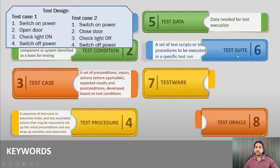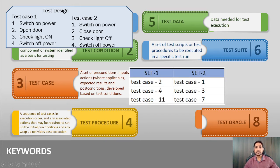Test suite is a set of test scripts or test procedures to be executed in a specific order or in a specific test run. You can have multiple test cases — say test cases 1 through 11 — and in a test suite you group them. When you execute suite 1, only test cases 2, 4, and 11 will run. When you select suite 2, test cases 1, 3, and 7 will execute. Grouping test cases in some order is called test suites.